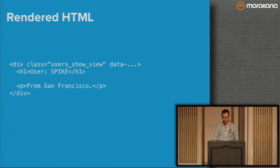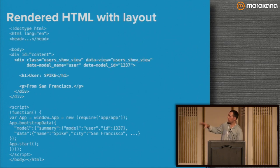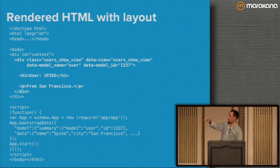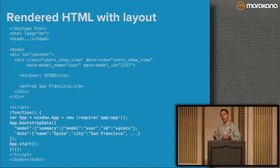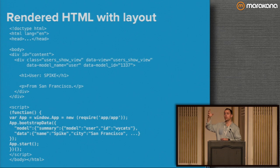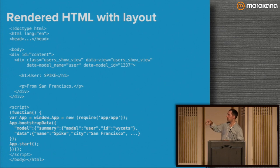Here's what that HTML looks like in the context of the full page on first load. The view content is in bold, the rest is the layout. At the bottom we bootstrap the app — window.app equals app — which is useful so you can go into the inspector and type app.router to inspect state. There's also a bootstrapData method that passes through all the data fetched in the controller so it can be hydrated into real classes on the client side.